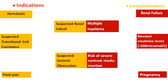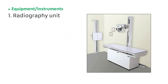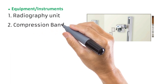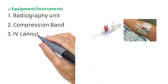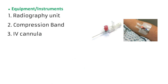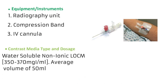Also worthy of mention is that extreme precaution must be taken when this examination is carried out on diabetic patients. A conventional or digital radiography unit with an over-couch tube and bucky tray is normally used for IVU. A device for compressing the abdomen is used by some departments. As for contrast media, a water-soluble, preferably non-ionic contrast media with an iodine concentration of between 350 and 370 milligrams of iodine per milliliter is used. The average volume administered is 50 milliliters, though this varies greatly with the patient's condition and size.